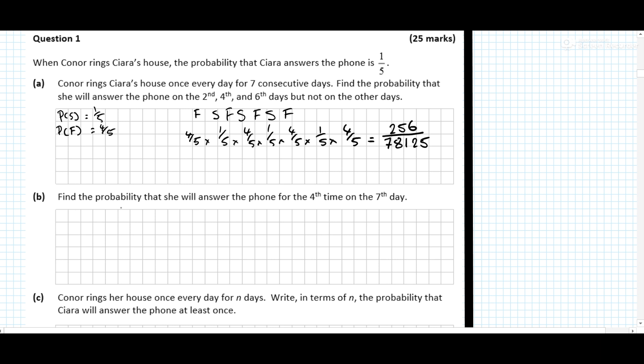Find the probability that she will answer the phone for the 4th time on the 7th day. Now, this question, for the 4th time, is going to be like a Bernoulli trial. Okay, so think about the first 6 days, what do we want to happen on the first 6 days? We want 3 successes in the first 6 days, and we want success on the 7th.